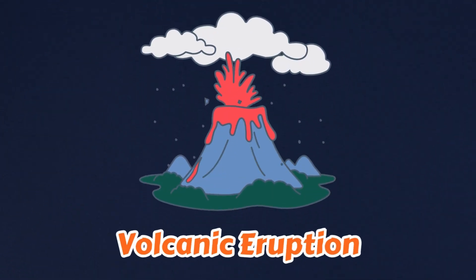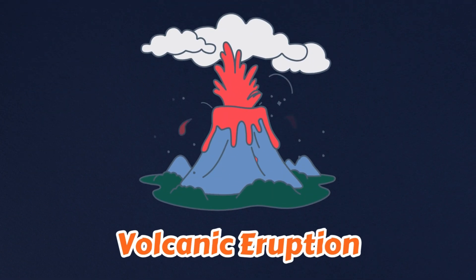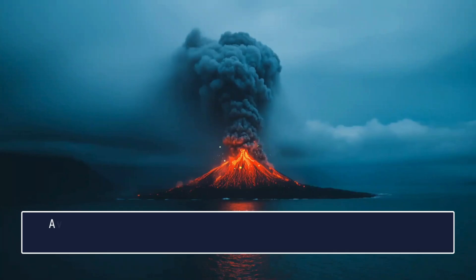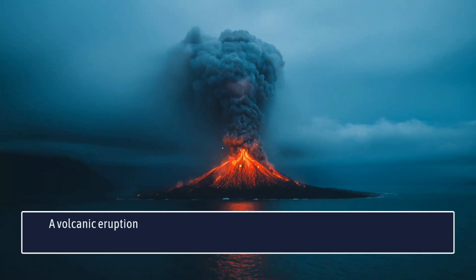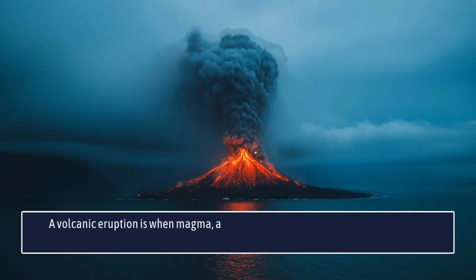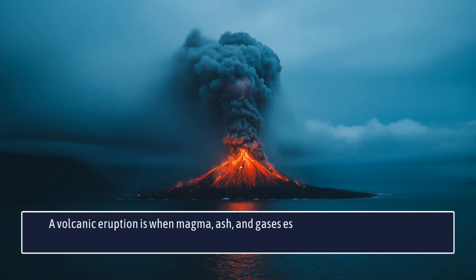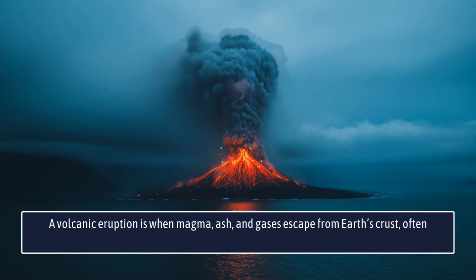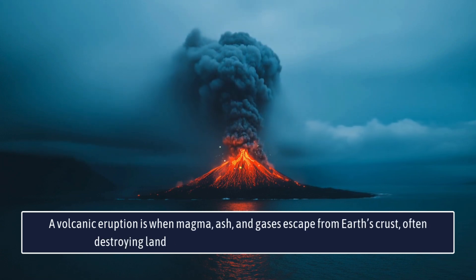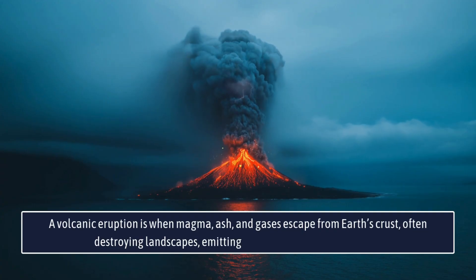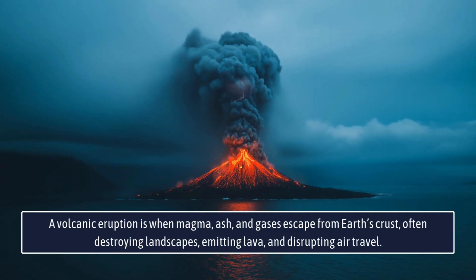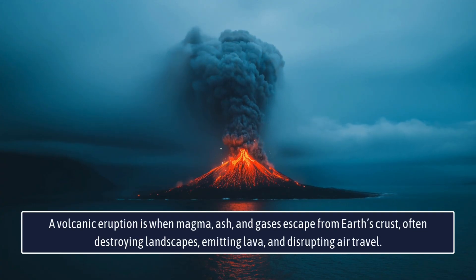Volcanic eruption. This is volcanic eruption. A volcanic eruption is when magma, ash, and gases escape from earth's crust, often destroying landscapes, emitting lava, and disrupting air travel.